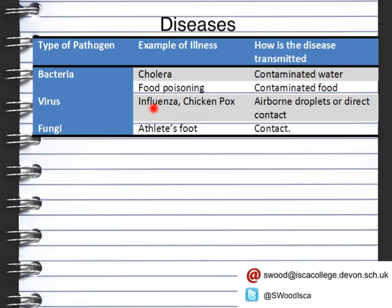Diseases such as influenza or flu and chickenpox are caused by a virus. These can be caught from airborne droplets — so if somebody coughs or sneezes, that's how you get influenza. Chickenpox you get via direct contact. And then a fungal infection that you might have is athlete's foot, which you can also get via contact.